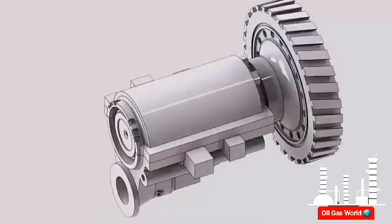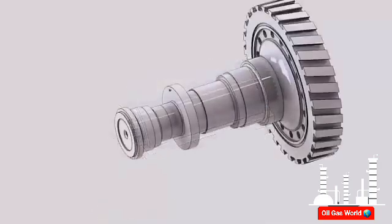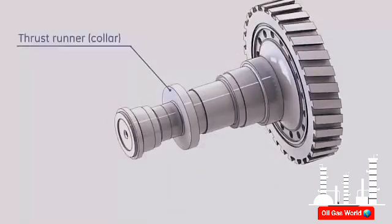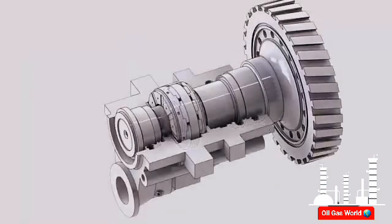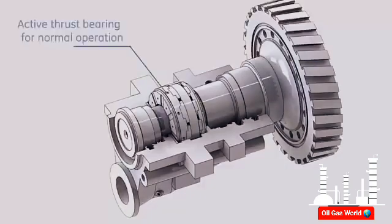The thrust bearing major components are the thrust runner, which is integrated in the compressor rotor forward stub shaft, and two thrust bearings. During normal operation of the gas turbine, the sum of axial forces induced by the airflow on the compressor stages and the hot gases flow through the turbine stages tend to move the rotor in the upstream direction, so that the active thrust bearing is located on the forward side of the thrust runner.